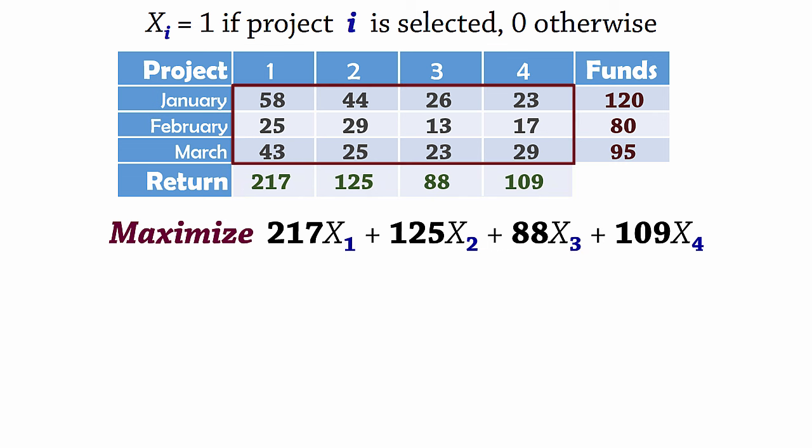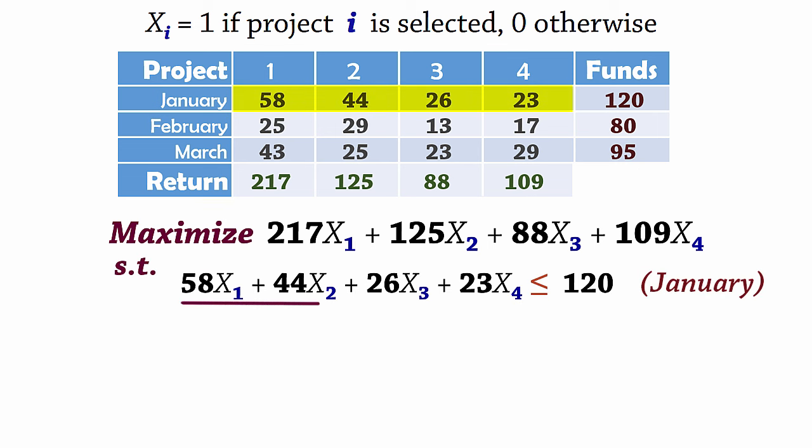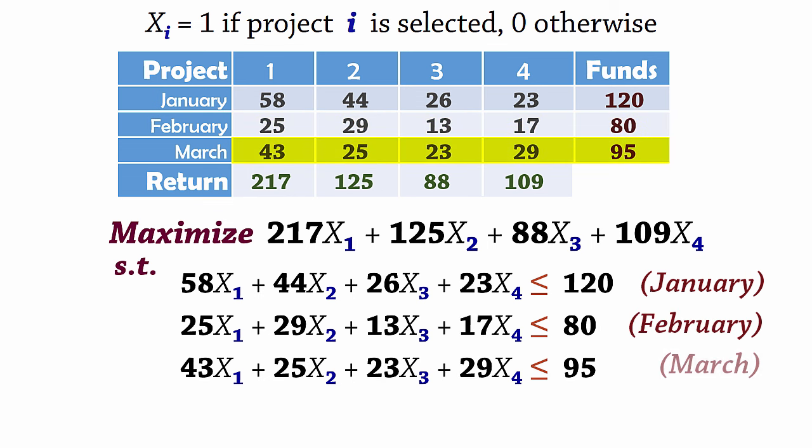Since project outlays are constrained by available funds, we write for January 58x1 plus 44x2 plus 26x3 plus 23x4 less than or equal to 120. We do the same for February and for March. And then complete the model by stating that the decision variables must be binary.